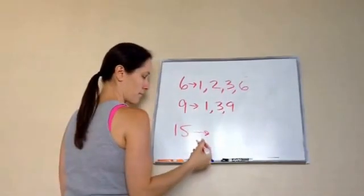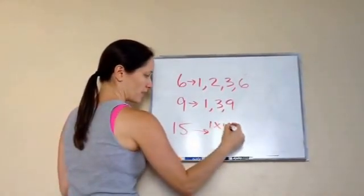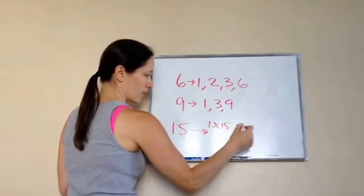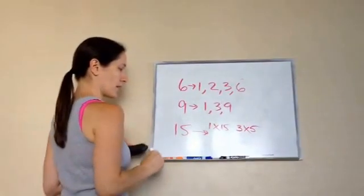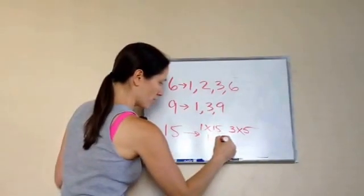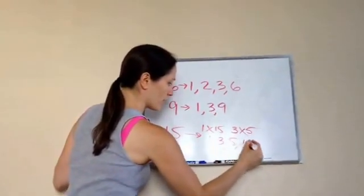Okay, and last, 15. 1 times 15, and 3 times 5. Is that it? Yep. Okay. 1, 3, 5, and 15 are the factors.